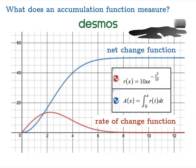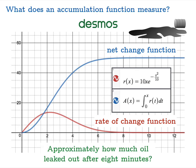Now let's use this graph to answer a question: approximately how much oil leaked out after 8 minutes? If we believe the accumulation function is doing what it's supposed to, instead of trying to approximate that area, we should just look at the value of the function a itself. It appears to have a horizontal asymptote at the value of 50, so it looks like after 8 minutes, 50 gallons has spilled — and there isn't going to be much more that spills; that's about all the oil there must have been in the barrel.